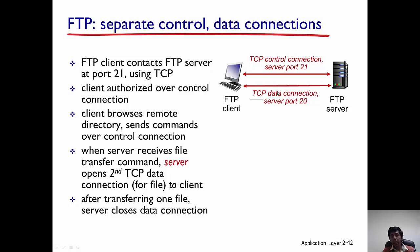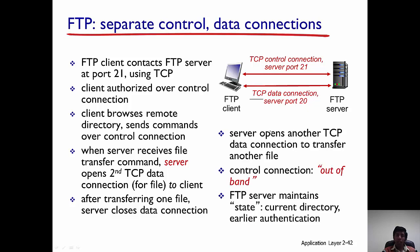Note that control and data flow along different connections. Once the file has been transferred, the data connection on port 20 is closed. If the client wants to transfer another file, another TCP connection is opened and the file is transferred. The control connection is always open, whereas the data connection is closed after every file transfer.